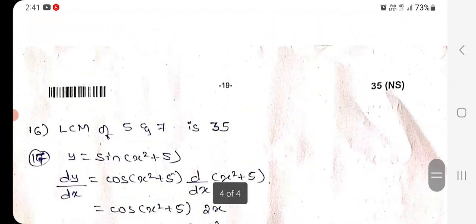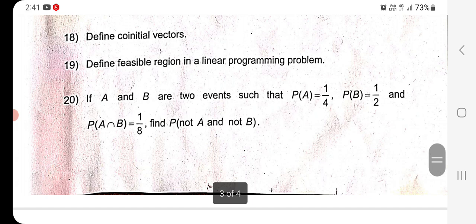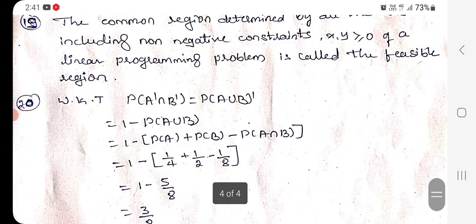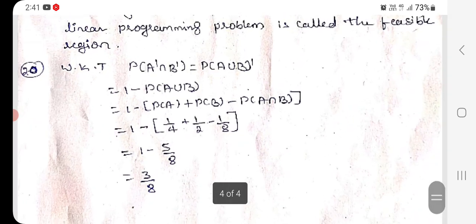Last question: If A and B are two events such that P of A equals 1/4, P of B equals 1/2, and P of A intersection B equals 1/8, then find P of A complement and B complement. First, calculate P of A complement intersection B complement equals P of A union B whole complement. Calculate P of A union B, which equals P of A plus P of B minus P of A intersection B. 1 minus 5/8 equals 3/8. That is the right answer. Okay, thank you.